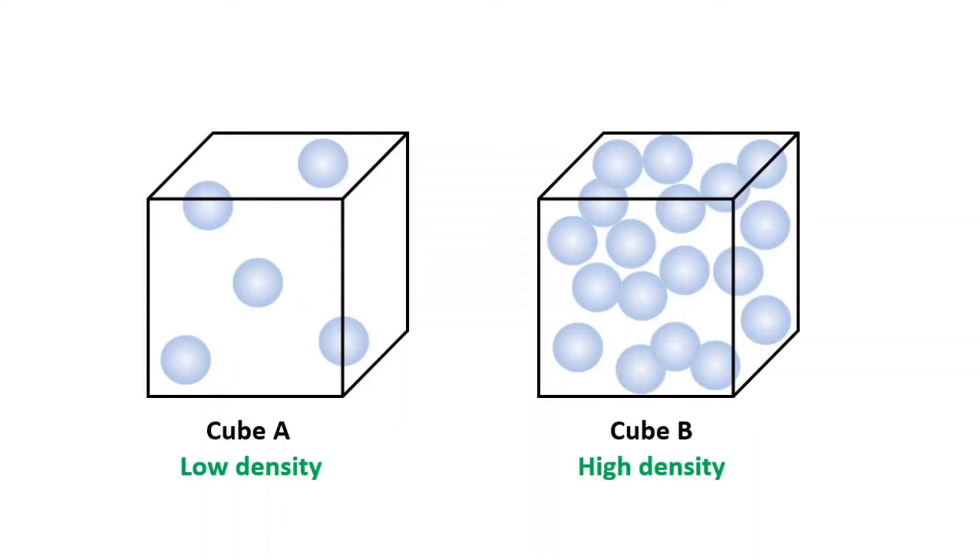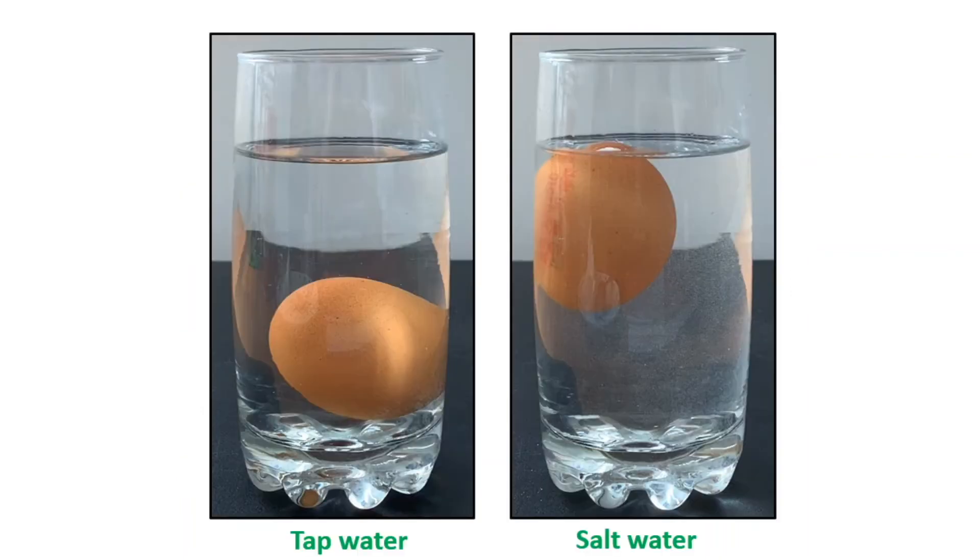Liquids like water have a density too. Whether an object sinks or floats in water depends on the density of the water and the density of the object. An object with a higher density than water will sink whereas an object with a lower density will float.